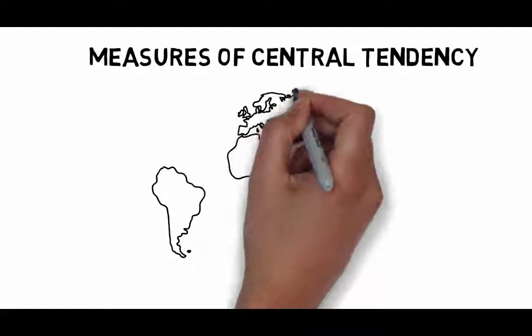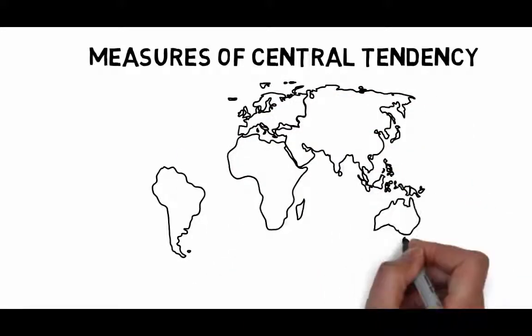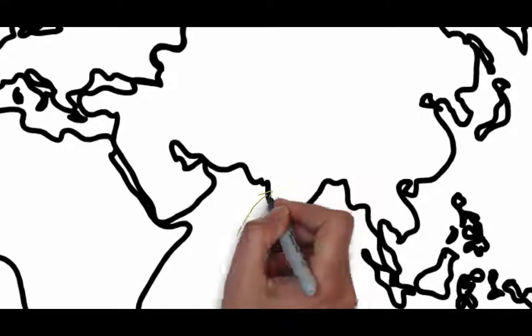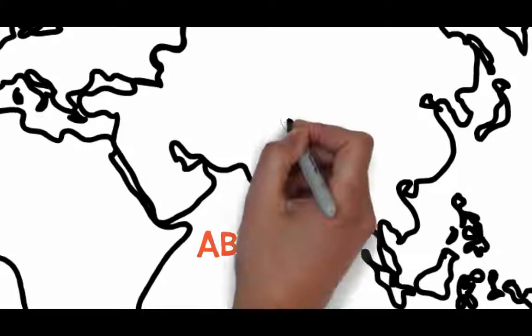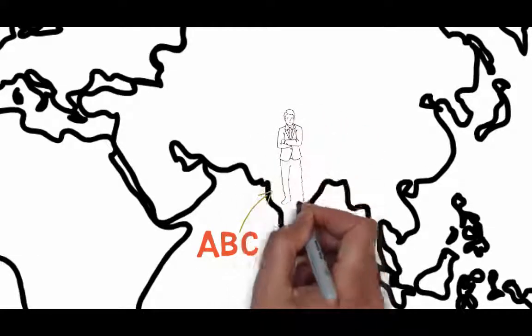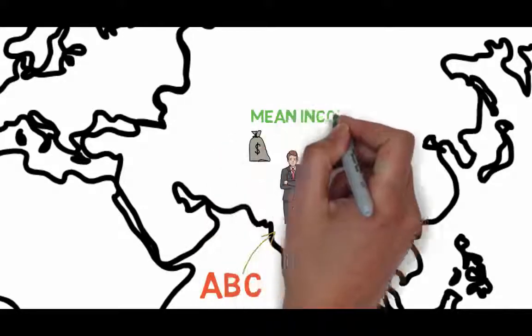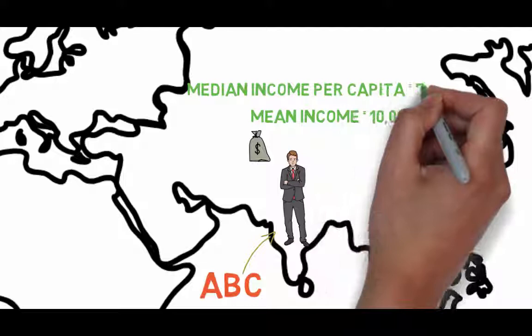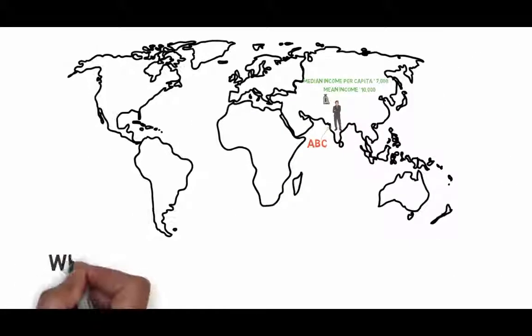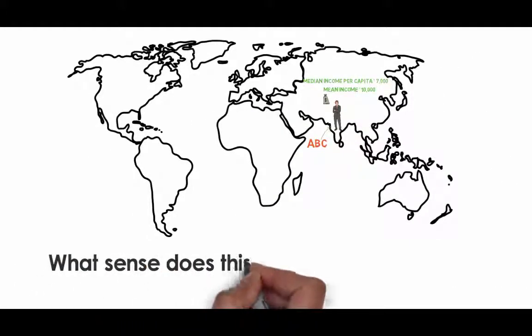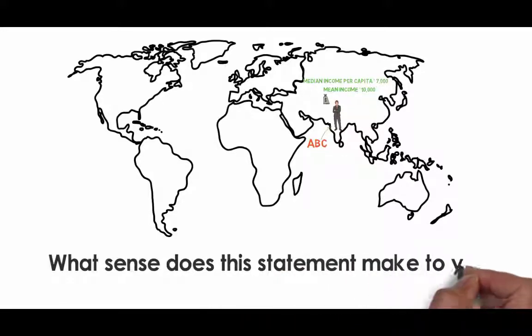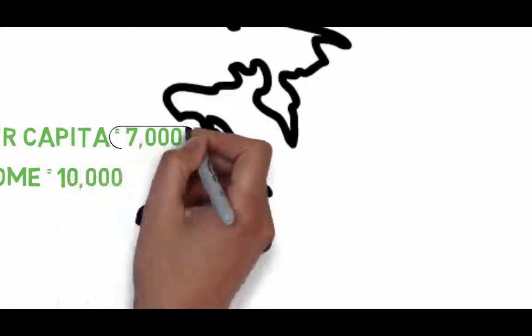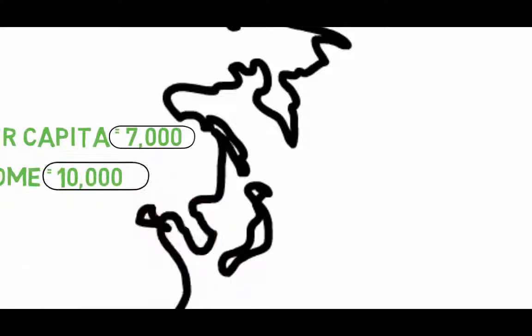Measures of Central Tendency. The mean income of an individual in a country ABC is 10,000 and the median income per capita is 7,000. What sense does the statement make to you? What significance do these two numbers have with respect to the per capita income of that nation?